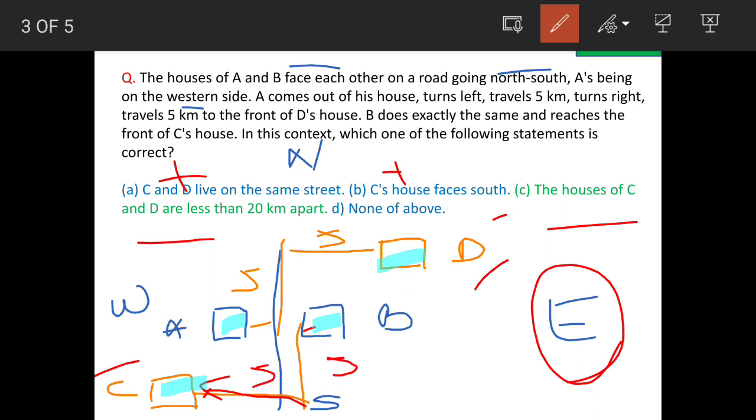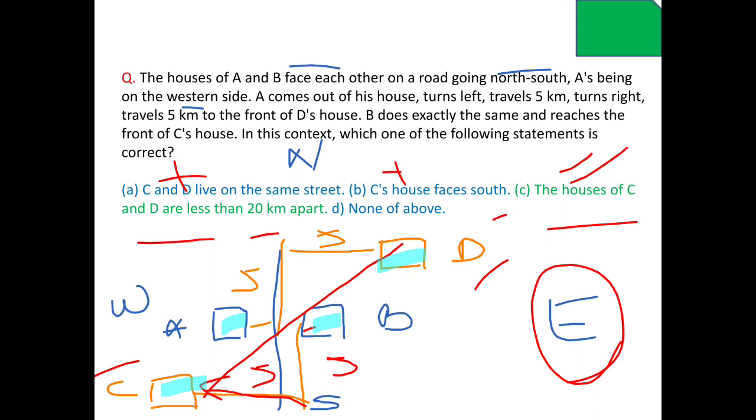If you draw a hypotenuse like this, this is going to be less than 20 kilometers. We will examine this in detail, and option C is the answer. We will now see the details of this option.